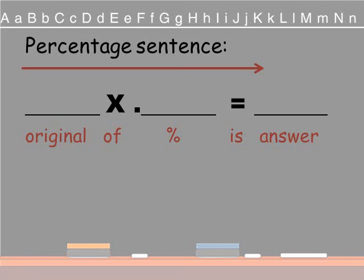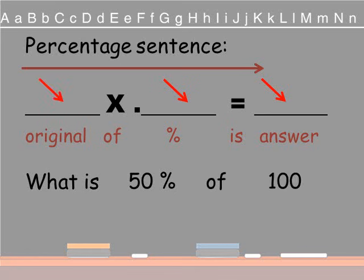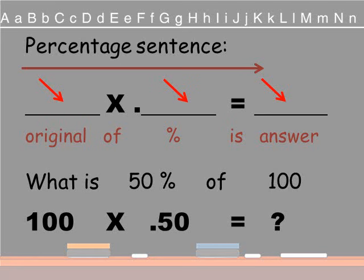So let's look at a written sentence. What is? So what means we don't know. That's a question. So is is the clue. So it's going to be the answer we're looking for. 50% is going to be converted into a decimal number. So that goes into the decimal blank. Of 100 is our clue. So we're multiplying 100. 100 is going to be our principal amount. So let's write it down in a mathematical form. 100 times .50 equals we don't know. We're looking for that.